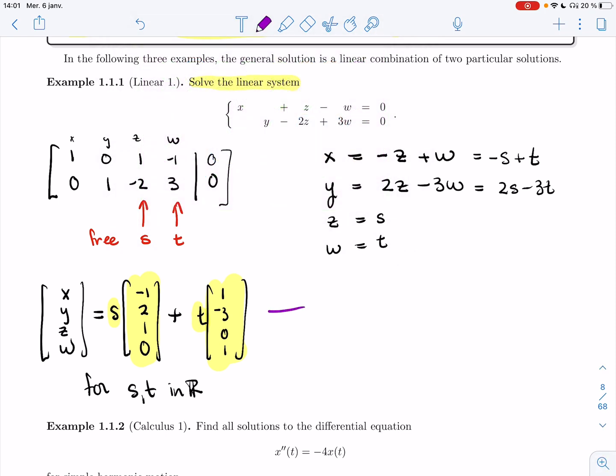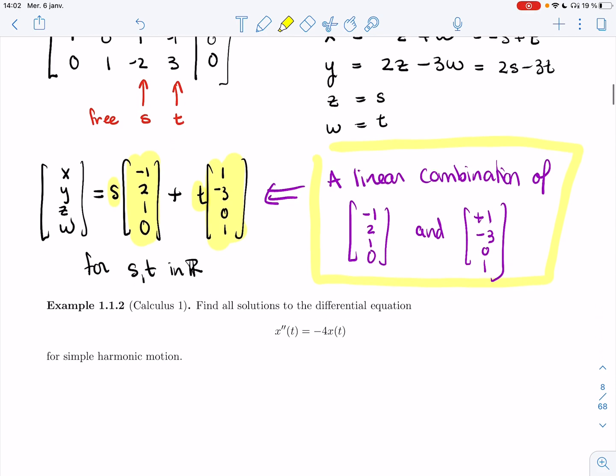Really what we have here is a linear combination of two vectors: minus 1, 2, 1, 0, and 1, minus 3, 0, 1. Our general solution would be the set of all these linear combinations over these two specific vectors that are two particular solutions.